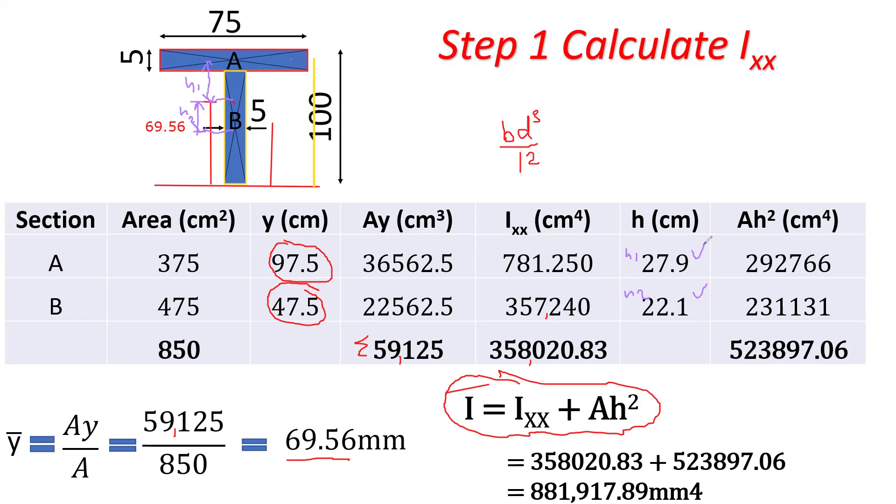So to get Ah squared, you basically multiply the area times h squared. And you get this huge value here, 292,766. Similarly for B, you get 231,131. So if you add these two, you get 523,897.06.